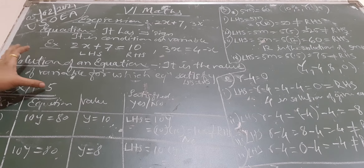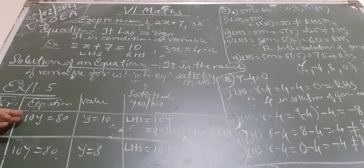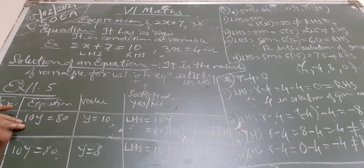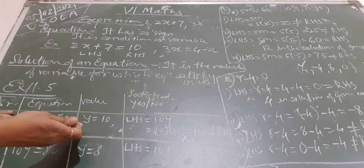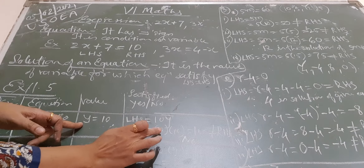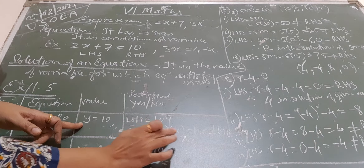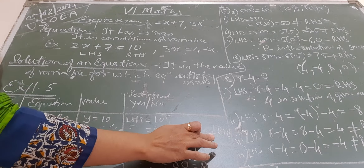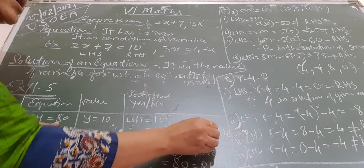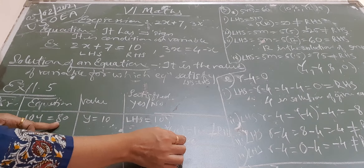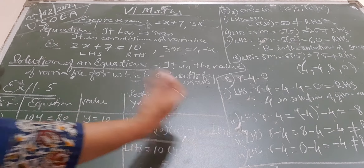Now in Exercise 11.5, a table is given for the equation 10y = 80. Out of these two sides, 10y will be the left hand side and 80 will be the right hand side. Different values are given to us. The left hand side is 10y. If we put y = 10, that means 10 into 10 equals 100. Is it the same as the right hand side? No, it is not. So it does not satisfy — left hand side is not equal to right hand side.